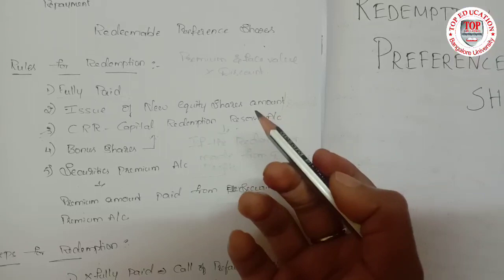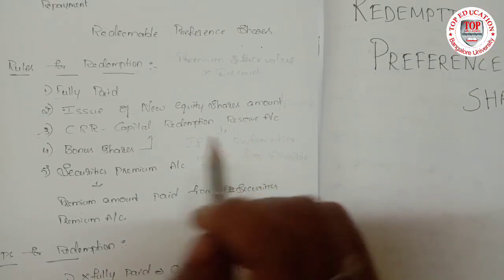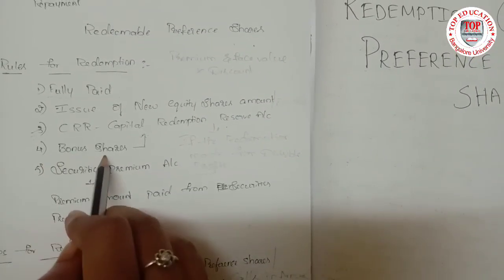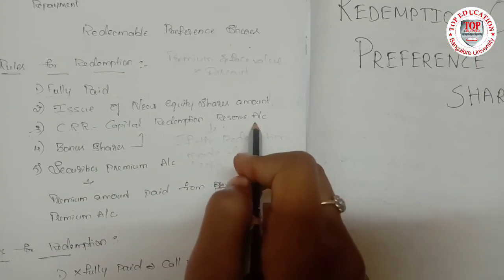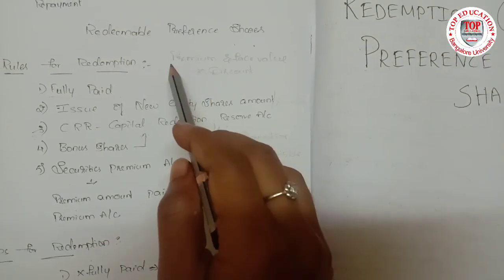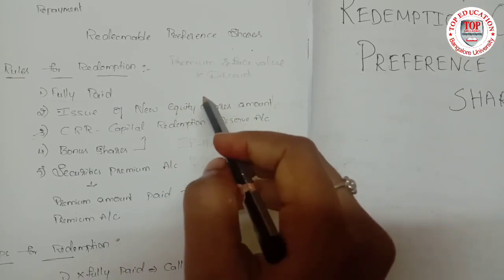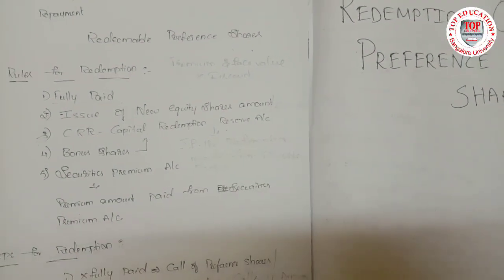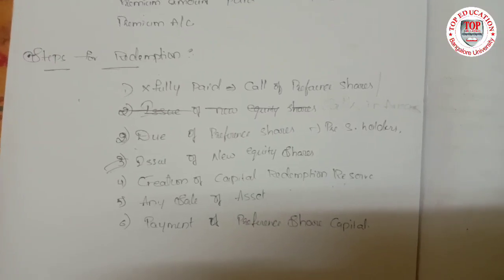The Capital Redemption Reserve account is created when redemption is made through divisible profits. Divisible profits include reserves like general reserve, P&L account, and reserve fund account — but not the capital reserve account. The fourth rule is that bonus shares can only be issued through the Capital Redemption Reserve account. The fifth rule is that if preference shares are redeemed at premium, the premium paid to preference shareholders is charged through the securities premium account.